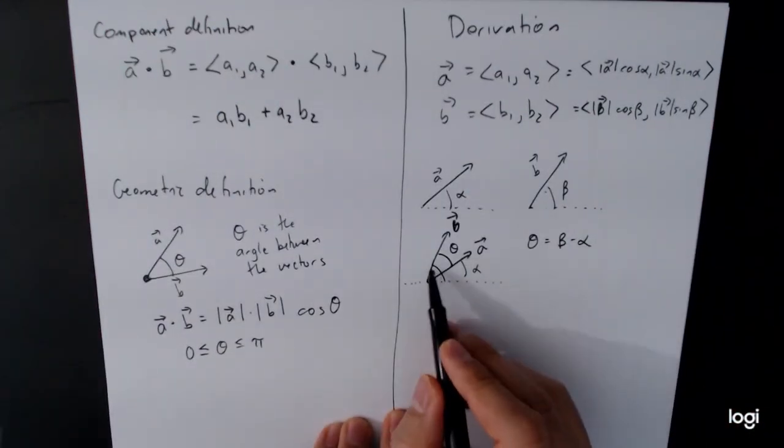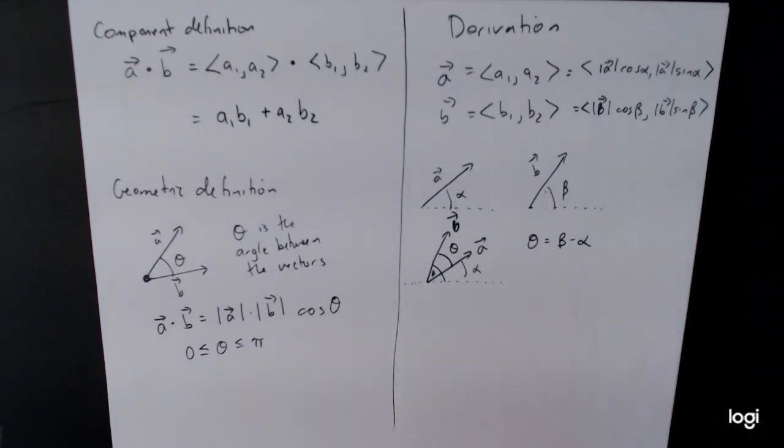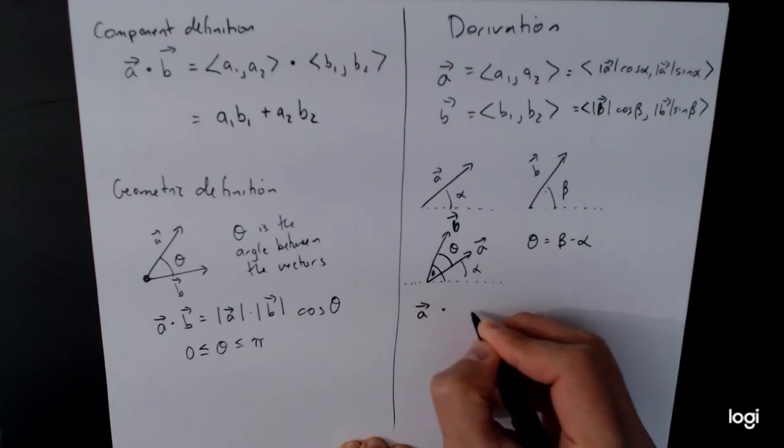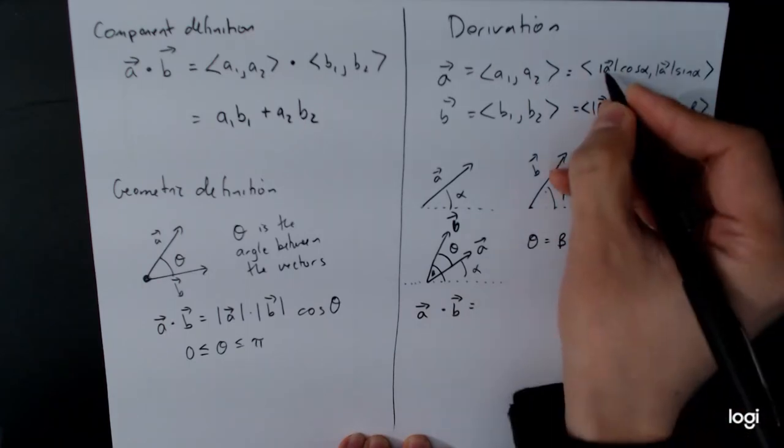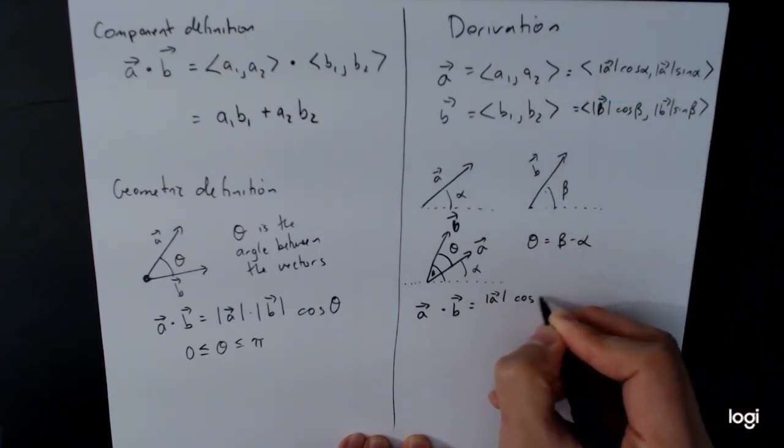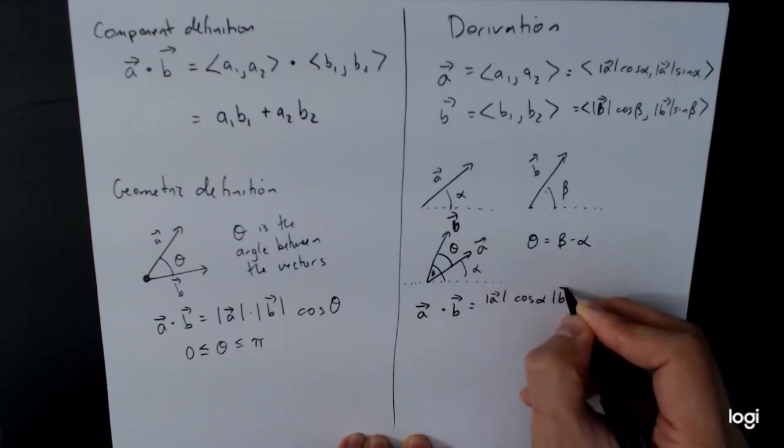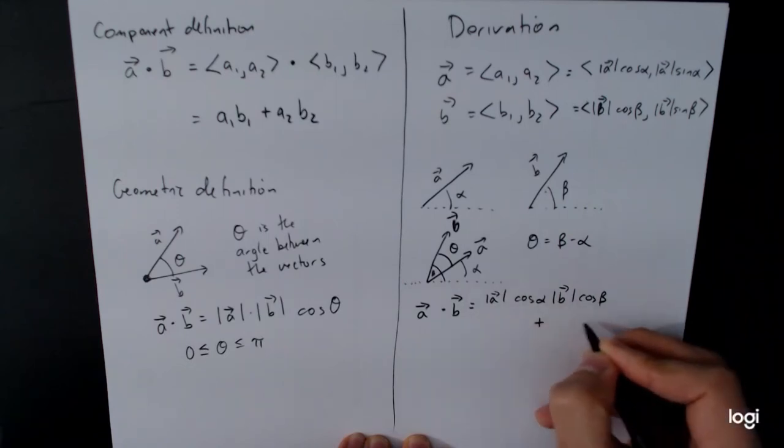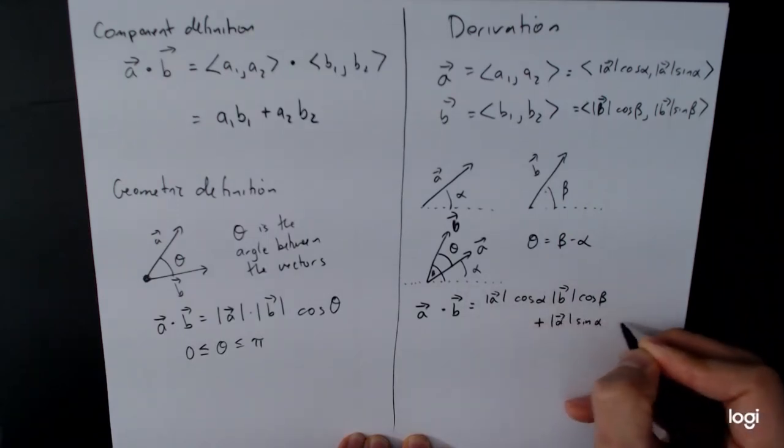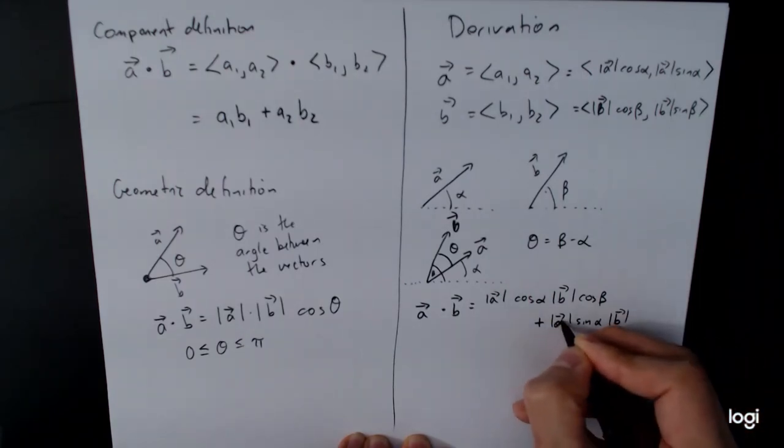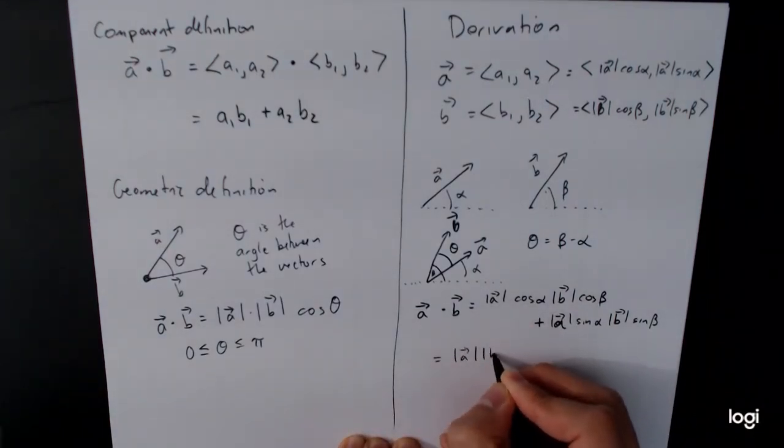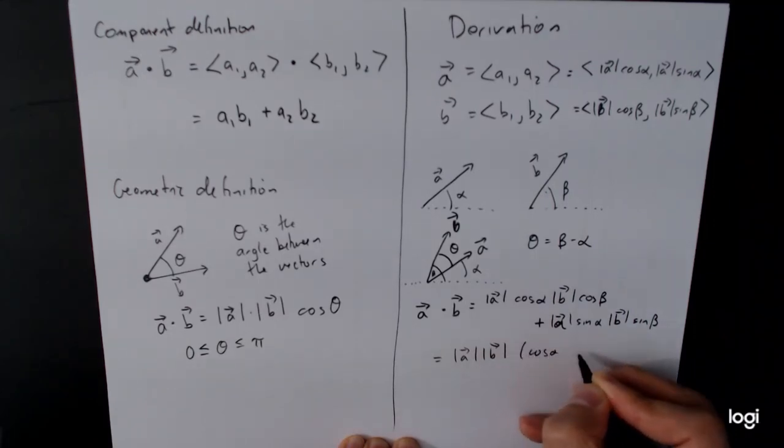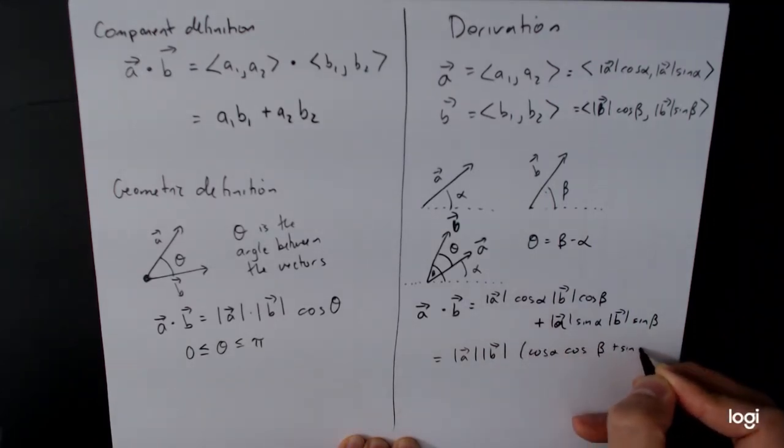And so now if we do the calculation, a dot b, according to the component definition, this is going to be length of a cosine alpha times the length of b cosine beta plus length of a sine alpha length of b sine beta. If you take a look at these two terms, they both have a length of a times the length of b in it, which is great. We have cosine alpha cosine beta plus sine alpha sine beta.